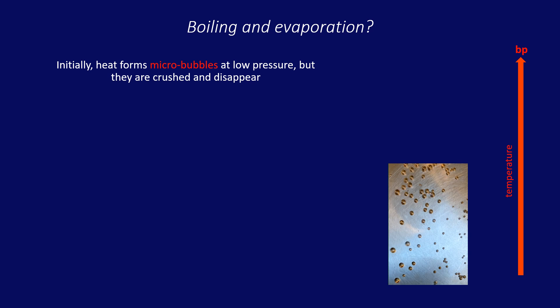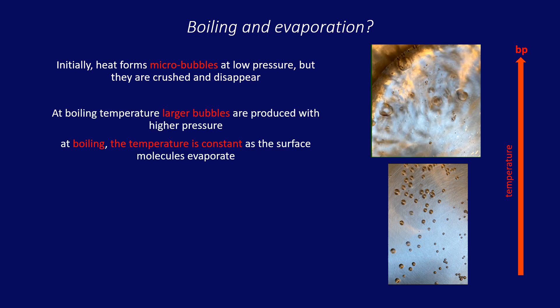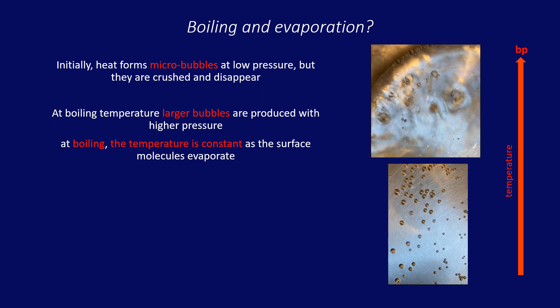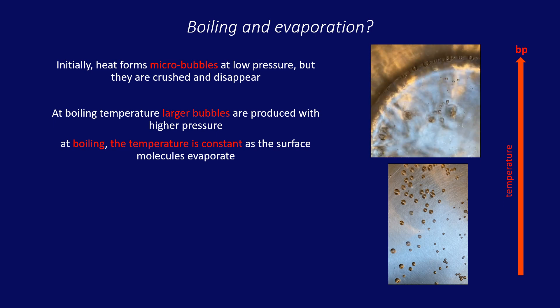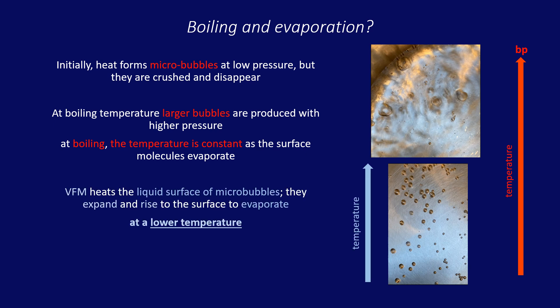If you watch closely at a boiling pot of water, you will first see a group of micro-bubbles appear, then disappear, because their vapor pressure is too low, so they're crushed. As the true boiling temperature is reached, larger bubbles with higher internal pressure are generated that can now rise to the surface and evaporate. With VFM, the liquid surfaces of the initial micro-bubbles are directly heated and expanded at that lower temperature. They rise to the surface so boiling can smoothly and efficiently evaporate, both water and solvents, at lower temperatures.